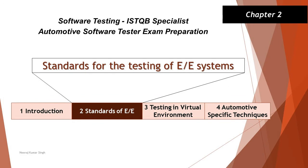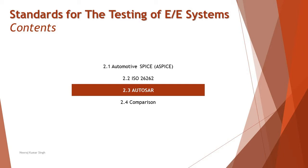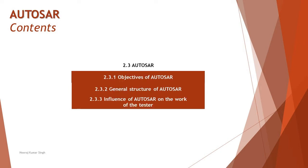Hello friends, welcome back to another tutorial on ISTQB Specialist Automotive Software Tester. We are in Chapter 2, moving into segment 2.3 on AUTOSAR, which stands for Automotive Open Software and System Architecture. We have three topics to cover, all at K1 level: 2.3.1 Objectives of AUTOSAR, 2.3.2 General Structure of AUTOSAR, and 2.3.3 Influence of AUTOSAR on the work of the tester.